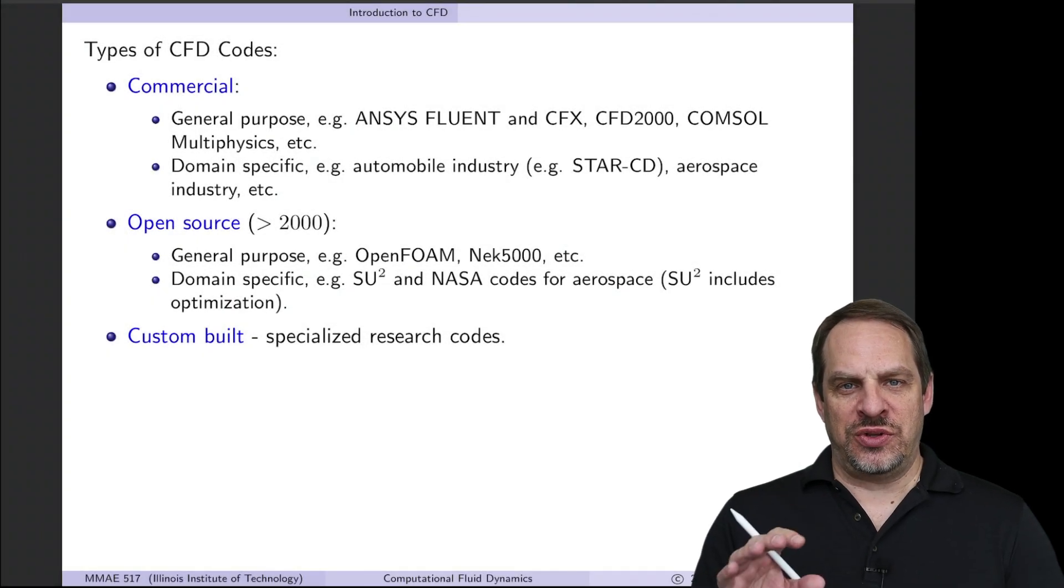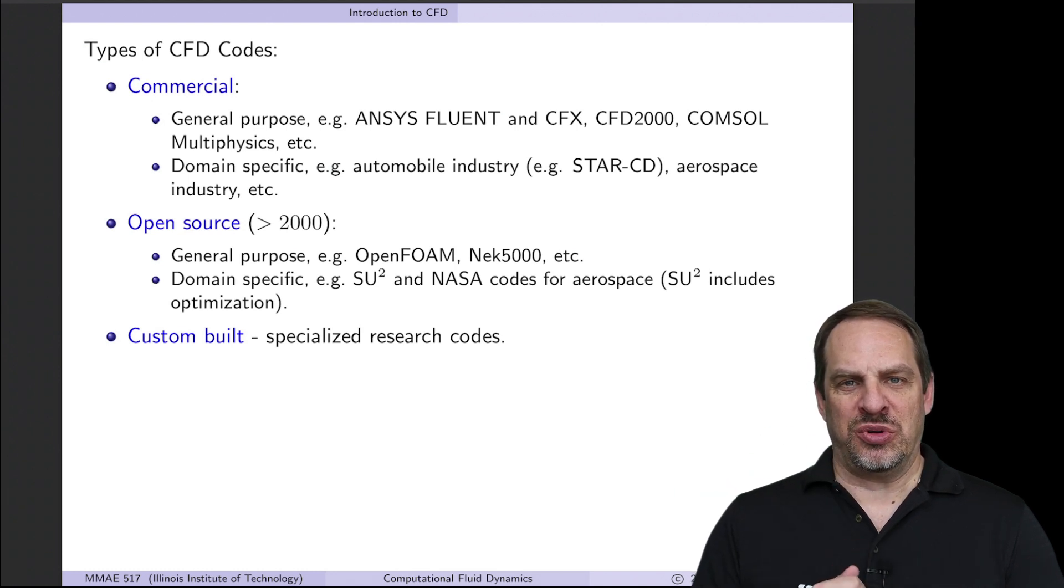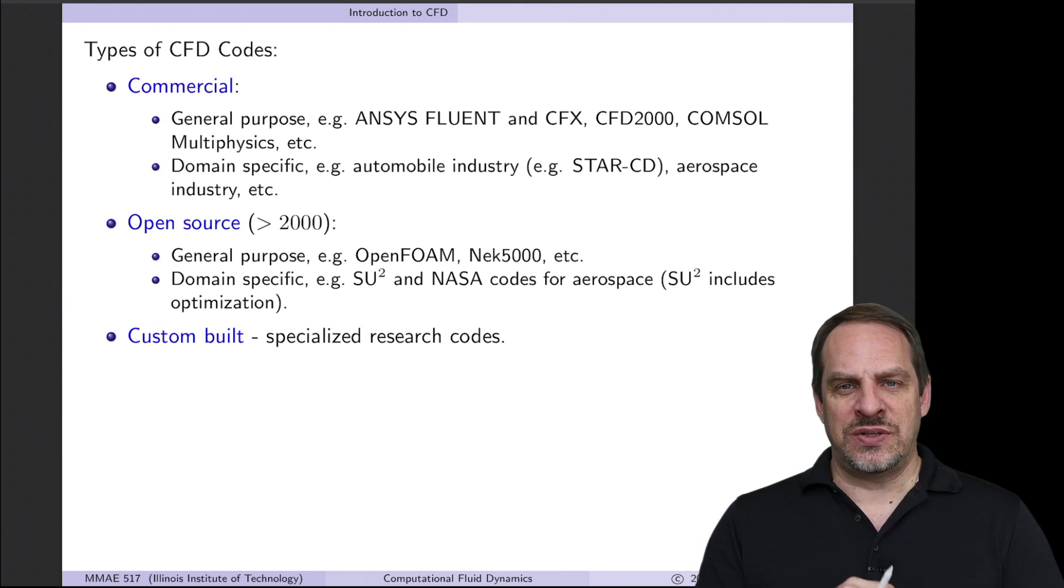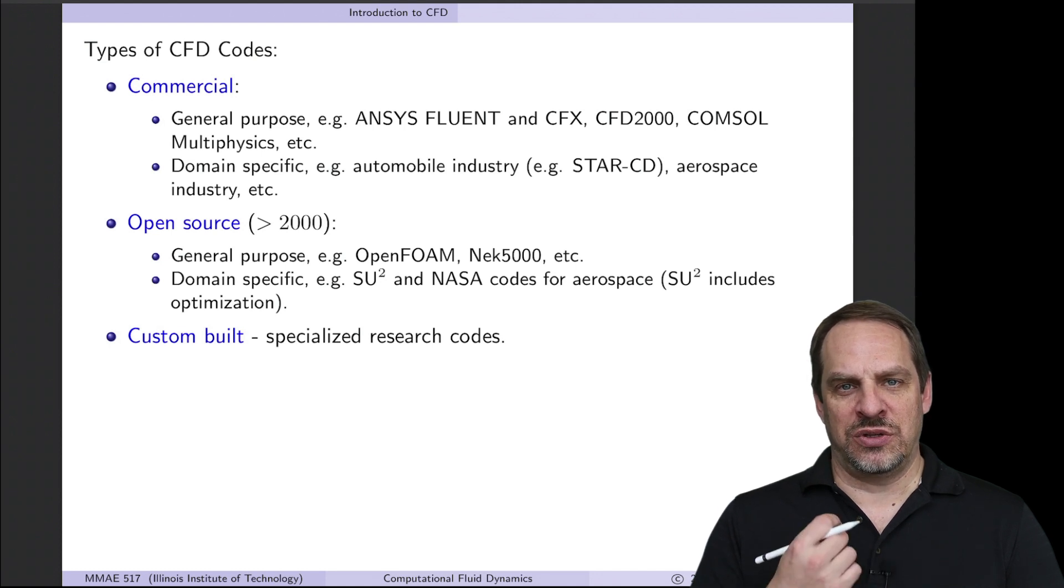In the previous video, we introduced numerical methods and contrasted computational with analytical and experimental approaches to scientific and engineering problems. In this video, I want to talk about the types of codes utilized in science and engineering contexts, the programming languages that are used, some pros and cons, and we'll work towards addressing whether Python is the perfect language for scientific computing.